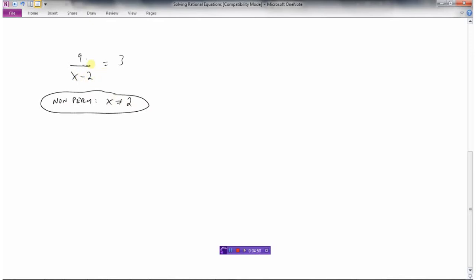We have to keep that in mind when we're solving the equation. Because if our answer ends up being 2 at the end, we'll have to reject it because that's a non-permissible value. I'll write the equation again over here so I can show my work.